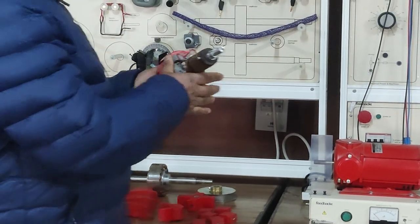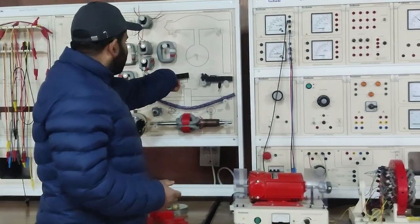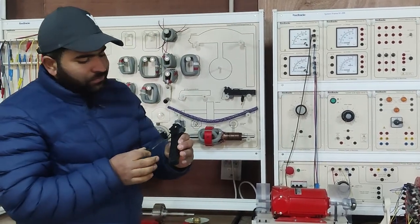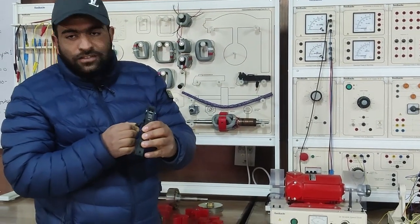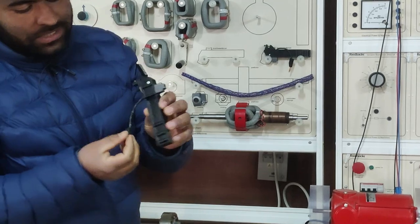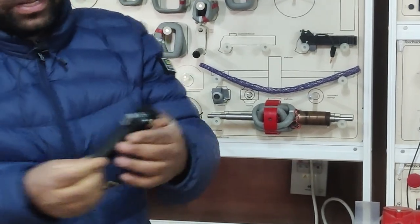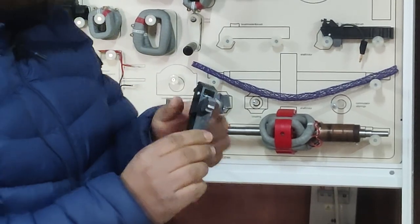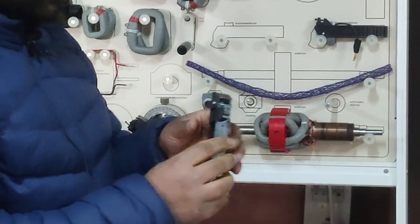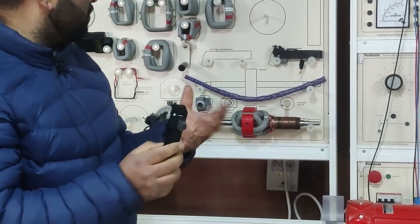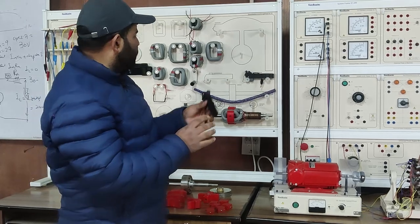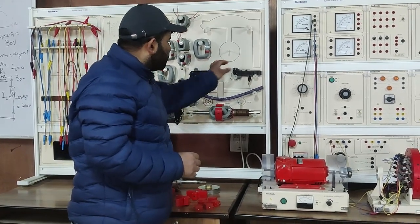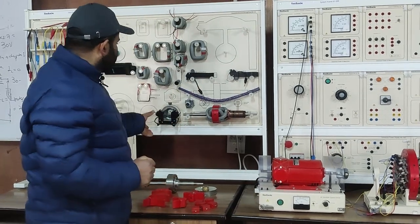This is the brush holder which holds this carbon brush, used in DC machines. This is the carbon brush and its connector. You can see the carbon brush making sliding contact with the commutator segments. Depending upon whether it is a DC motor or generator, the brush holder is used in the appropriate position.